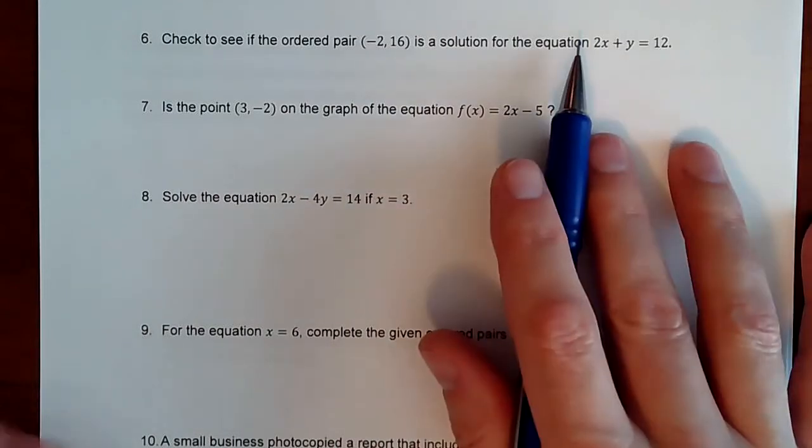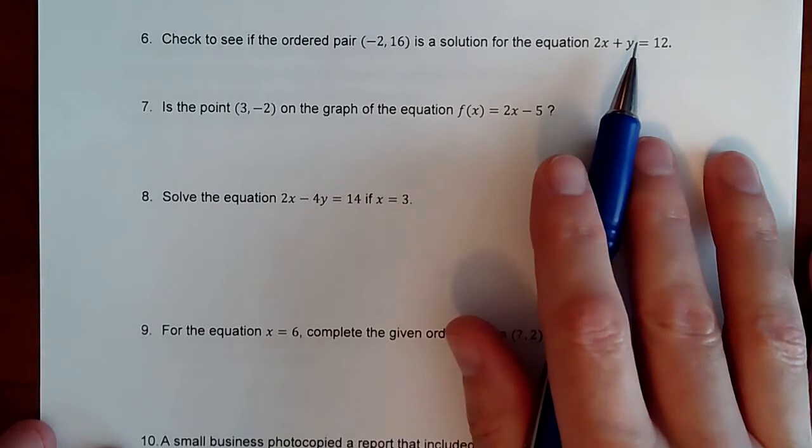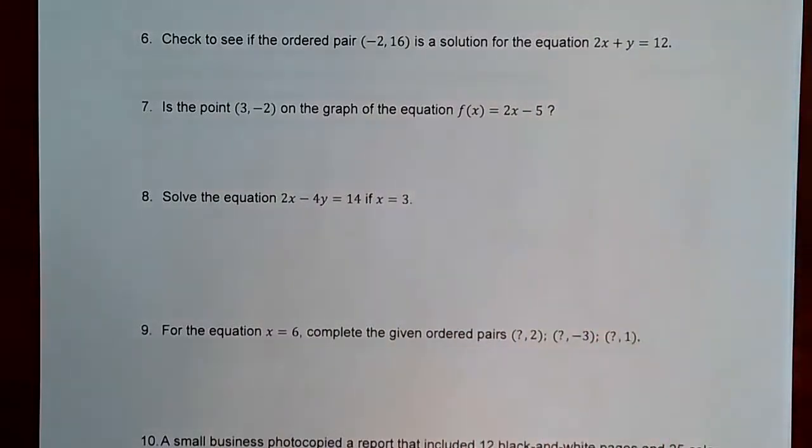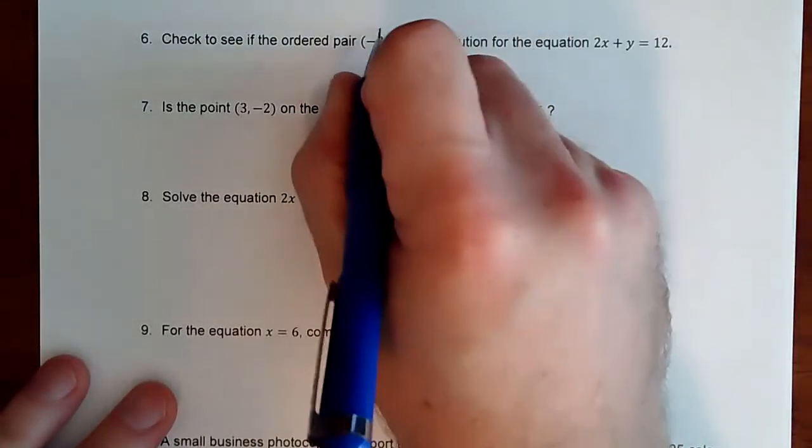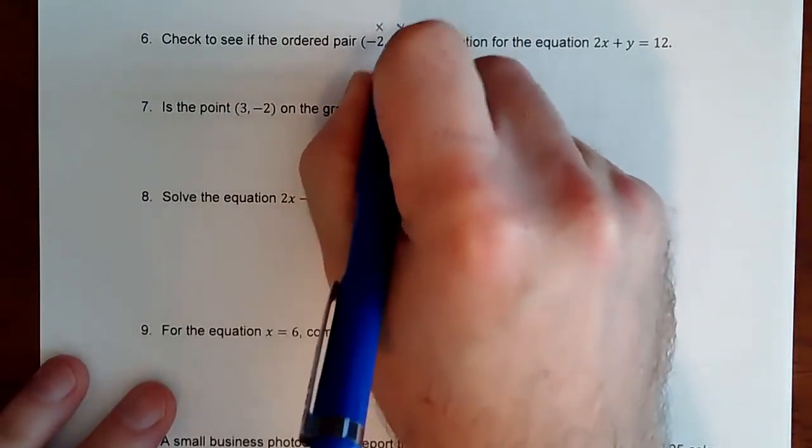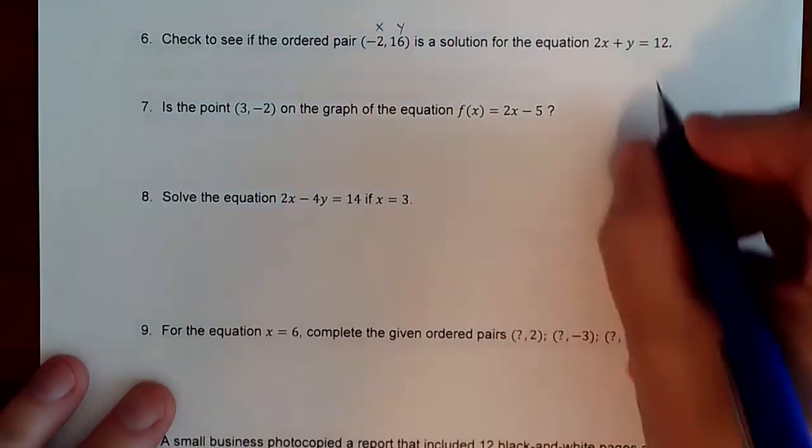And if it does, then it's a solution, and if you graphed it, it'd be a point on the line because every point on the line is a solution. So I have no idea. We're just going to sub in the negative 2 for the x.